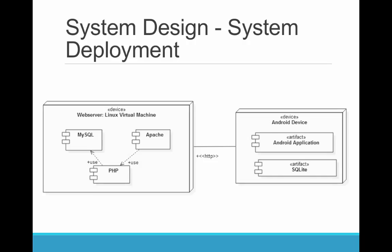The two main hardware components of the system are the Android device, which holds the mobile application, and the Linux virtual machine — a LAMP server. Communication between these two hardware components is established via HTTP.